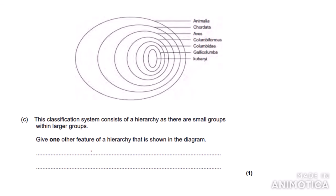The final part asks: 'Give one other feature of a hierarchy shown in the diagram.' We can say there is no overlap — as you can see between the circles there is no overlap. This is also a defining feature of a hierarchy that we covered earlier in the video, so we get that mark.